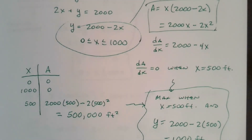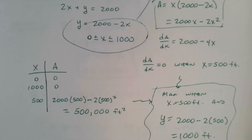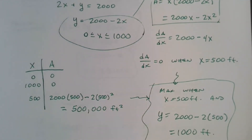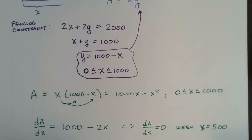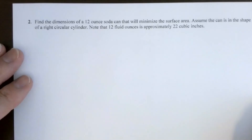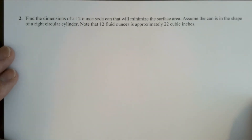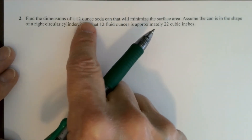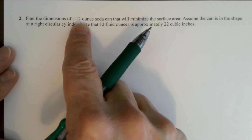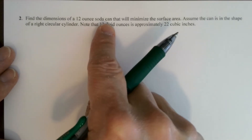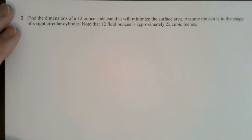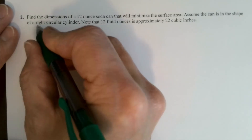These fencing problems are easy since they yield quadratic functions, much like parabolas in pre-calculus. Let's look at a more interesting problem where calculus really comes into play. We're going to find the dimensions of a 12-ounce soda can that will minimize the surface area. A soda can is not a perfect cylinder, but we'll assume it is — a right circular cylinder.